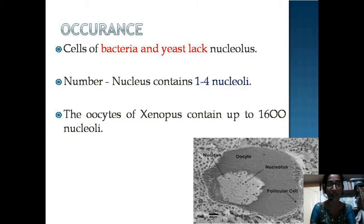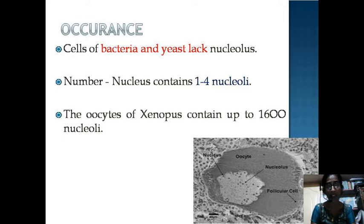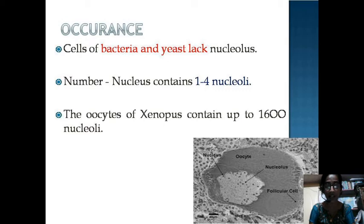Coming to the occurrence of the Nucleolus, most cells contain nucleoli. However, the cells of bacteria and yeast do not contain the Nucleolus. The number of nucleoli varies from one organism to another. Generally, it is 1 to 4 nucleoli within a single nucleus. But in the case of oocytes of Xenopus, it contains up to 1,600 nucleoli. The number of nucleoli depends on the species and also on the number of chromosomes.